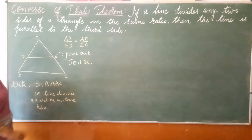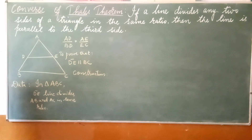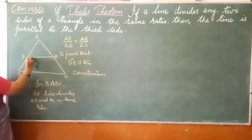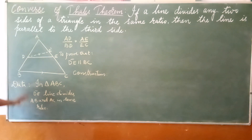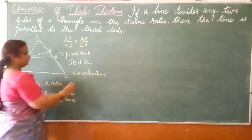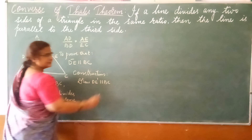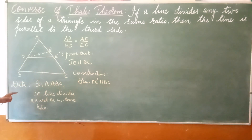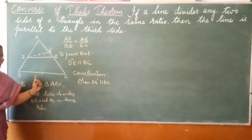For this we need to construct. According to Thales theorem, we need a parallel line, so we will assume one. Construction: Draw DE', where DE' is parallel to BC. We are drawing DE' parallel to BC as an assumption.